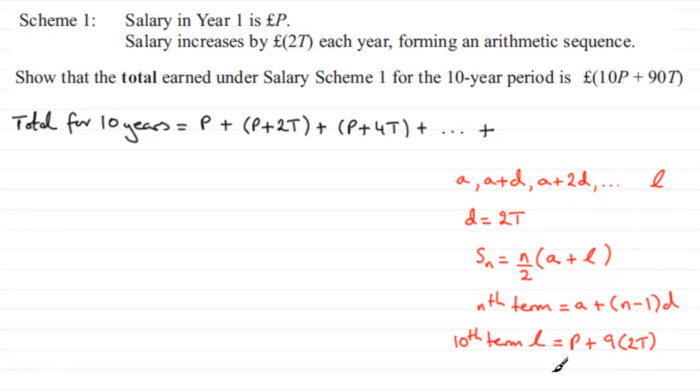And so what we've got here is that the last term, l, is p plus 18T. So we should be able to put that in then as our last term. So we'll go up to the 10th term, which is p plus 18T.